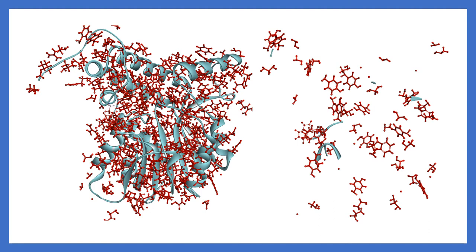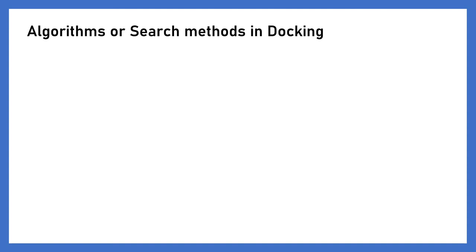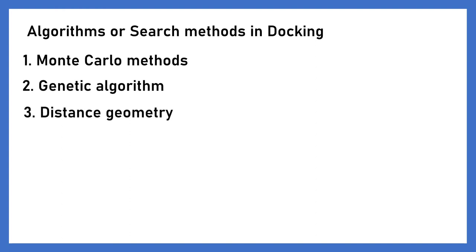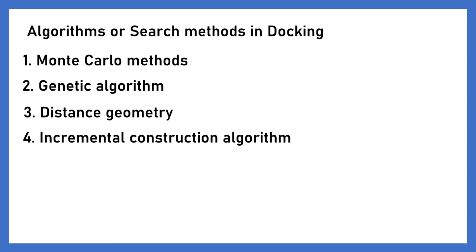Even though we are considering side chain flexibility, the calculations involved are also based on molecular mechanical calculations — that means they are based on approximations. What these molecular mechanics are and what the approximations are, we will see in future videos. For now, I have explained the difficulty in considering protein flexibility when we perform docking. Now we will see what are the different algorithms or search methods in docking: Monte Carlo methods, genetic algorithm, distance geometry, and incremental construction algorithm.